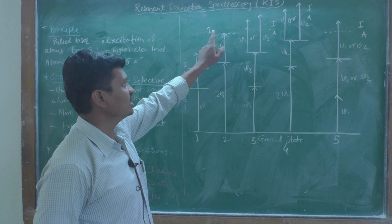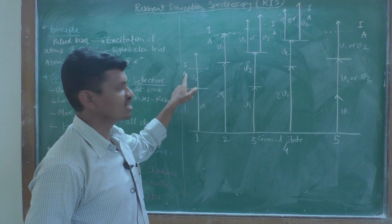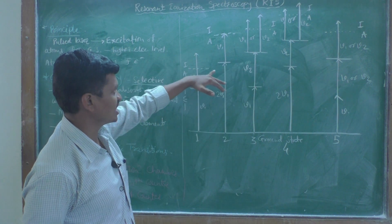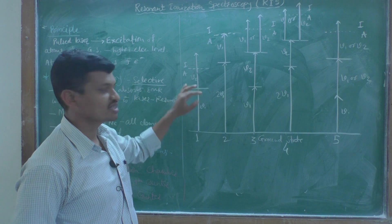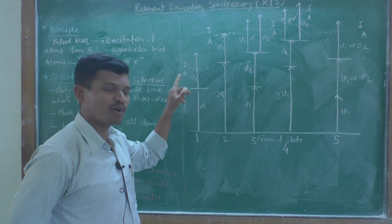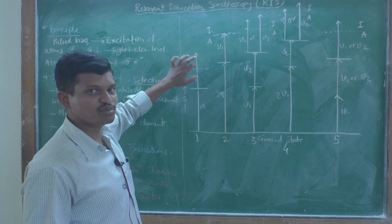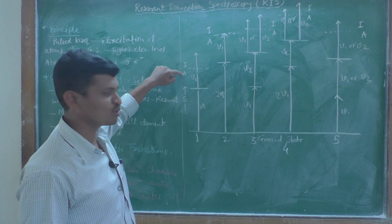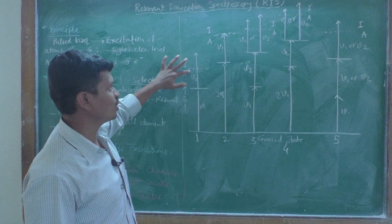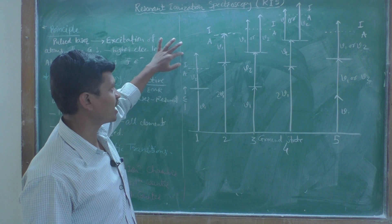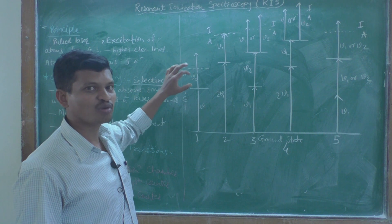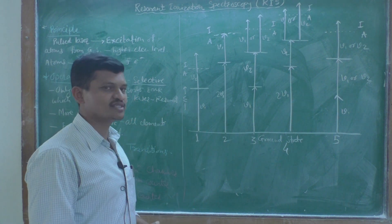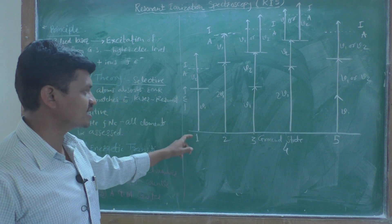Below each dashed line, 'A' is written to indicate atoms, and 'I' indicates ions. Below the dashed line, the analyte sample exists as atoms. When the atoms acquire energy exceeding this minimum threshold — the ionization energy — they are converted to ions. So 'A' stands for atoms and 'I' stands for ions.